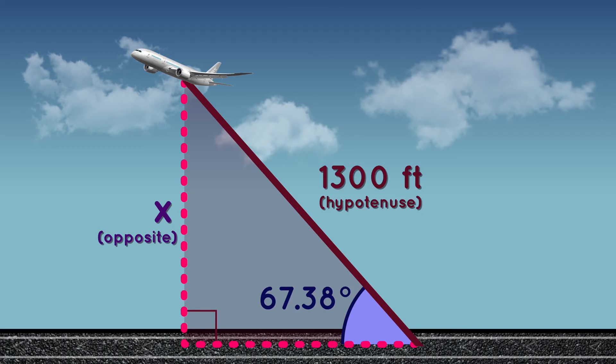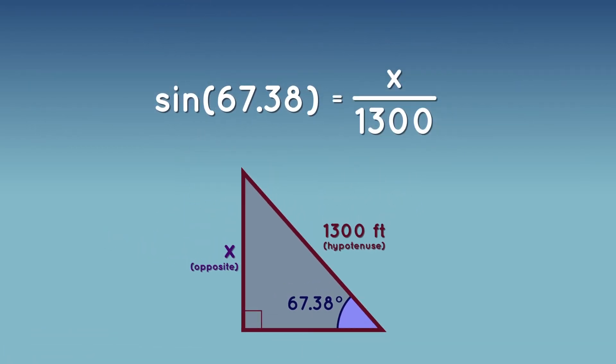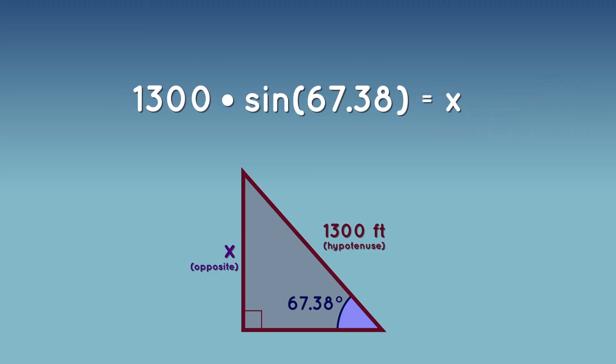Now we set up our equation. Sine of 67.38 is equal to opposite, which is x, over hypotenuse, which is 1,300. And now we just do simple algebra. To get x alone, we multiply both sides by 1,300. Now we have 1,300 times the sine of 67.38 equals x.